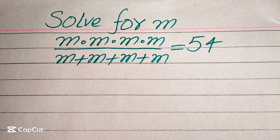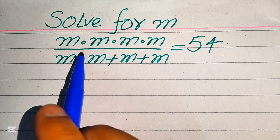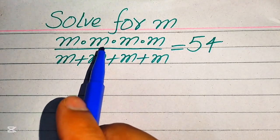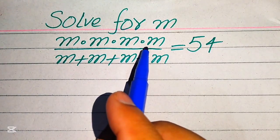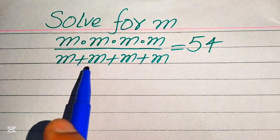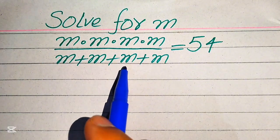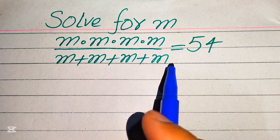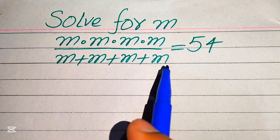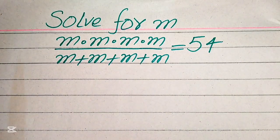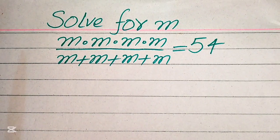Hello everyone, welcome to solve this nice math algebra problem. So here we have m multiplied by m multiplied by m multiplied by m, and it is divided by m plus m plus m plus m, and this whole equation equals 54. We can solve this problem for all the values of m.